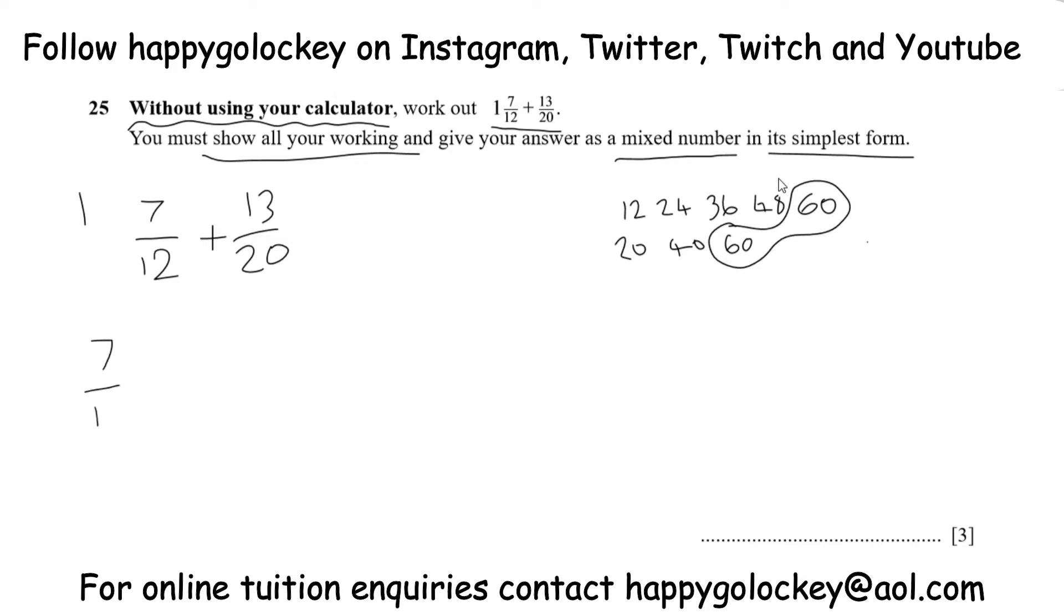Next stage then, we're going to rewrite 7 twelfths as something over 60. So we need to ask, how many twelfths do we need to make 60? And 12 times 5 is 60. So whatever you do to the bottom, you have to do to the top. 7 times 5 is 35.